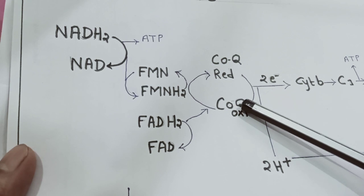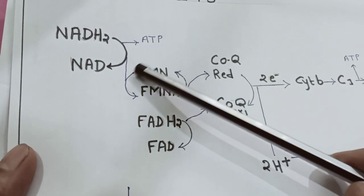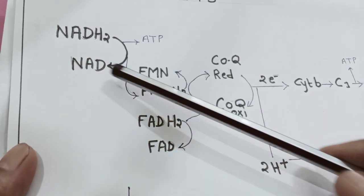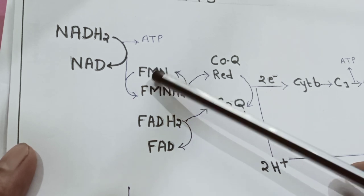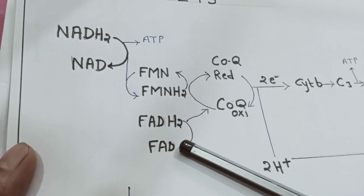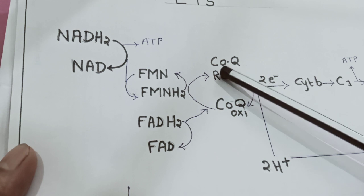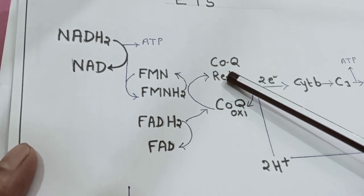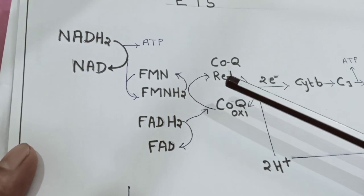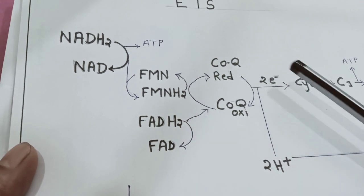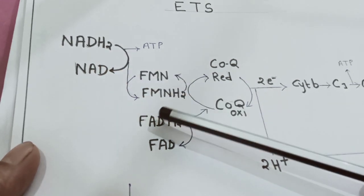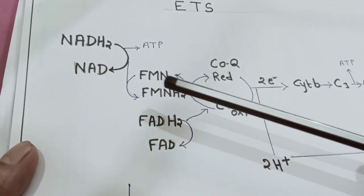Let's first discuss what these coenzymes are. NAD is nicotinamide adenine dinucleotide, FMN is flavin mononucleotide, and FAD is flavin adenosine dinucleotide. Coenzyme Q is present in the F1 particle and its other name is ubiquinone. All these coenzymes are helpful in the process of respiration.